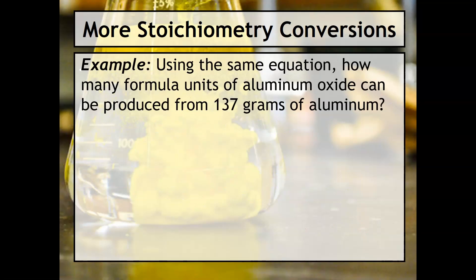Let's try another example. It says using the same equation, how many formula units of aluminum oxide can be produced from a hundred thirty seven grams of aluminum? So here's our equation again, we've got our known and our unknown. Now the difference is we're starting out with formula units here, so we want formula units of aluminum oxide - so that's a little different.